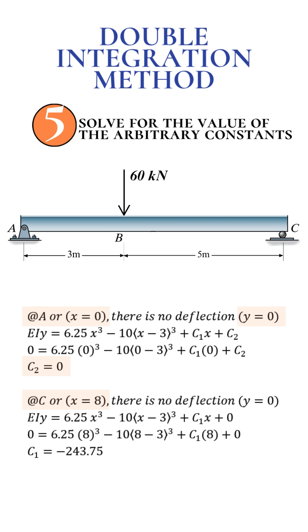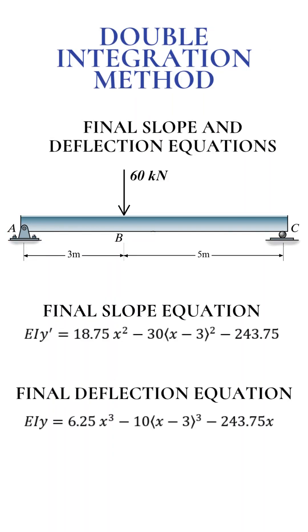At point C, X equals 8, another pin support, so Y equals 0 again. Solving gives C1 equals negative 243.75. With these values, substitute back into the slope and deflection equations to finalize them.